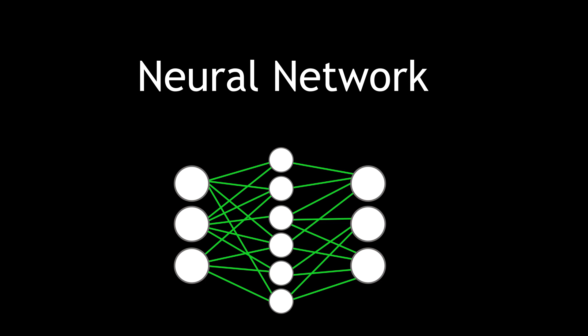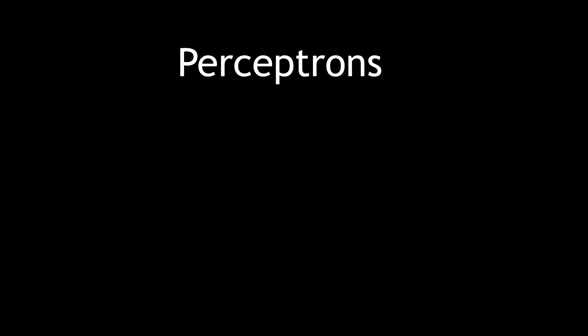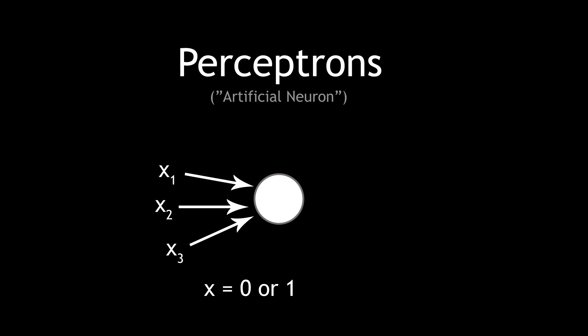So how do we actually implement something like this in practice? Well, simple neural networks are built up from systems called perceptrons. These are a kind of artificial neuron. Each perceptron takes in several binary inputs, x1, x2, x3, and so on. It uses these to produce an output, y, just by taking their sum.